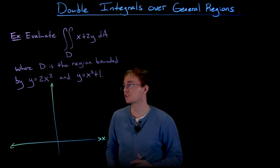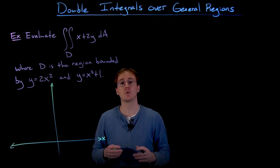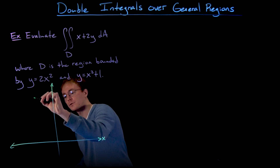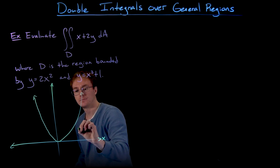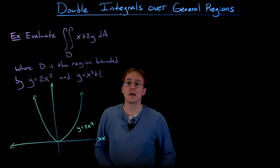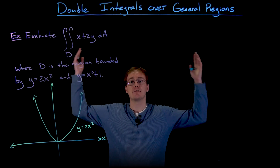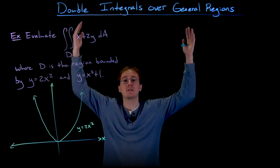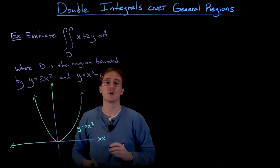To visualize region d, let's graph y equals 2x squared and y equals x squared plus 1. The graph of y equals 2x squared is a concave-up parabola with vertex at the origin, vertically stretched by a factor of two. The graph of y equals x squared plus 1 is also a concave-up parabola but shifted up one unit, with vertex at (0, 1).